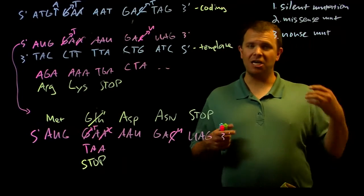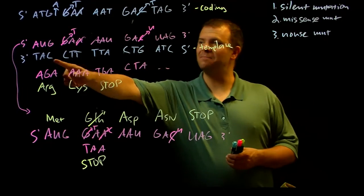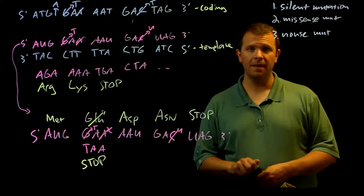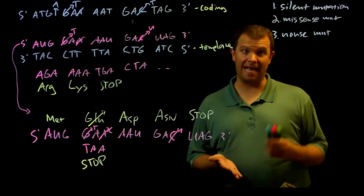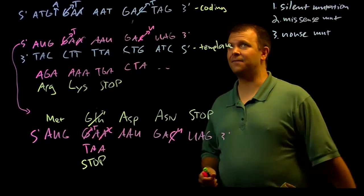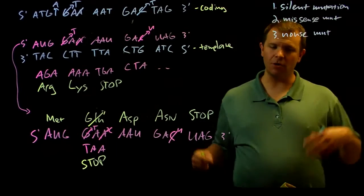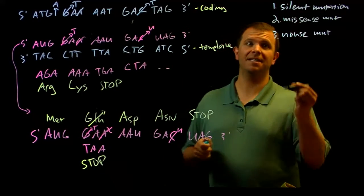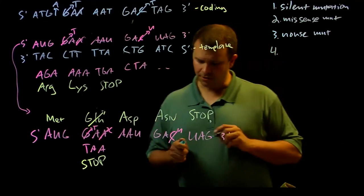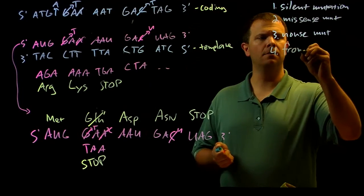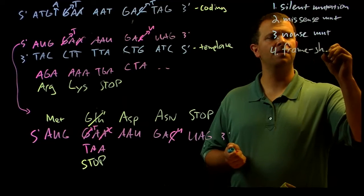And it changes not only the amino acid at the location of the insertion, but every single amino acid after that, which can have a dramatically deleterious effect on the protein and often leads to an early stop codon as well. And so this kind of mutation we call a frameshift mutation.